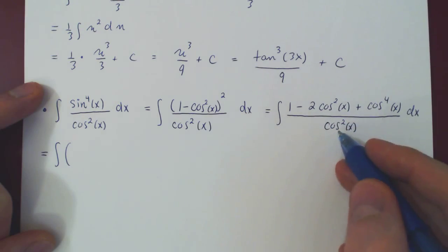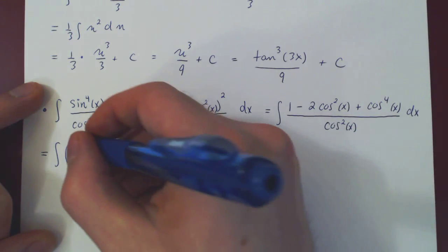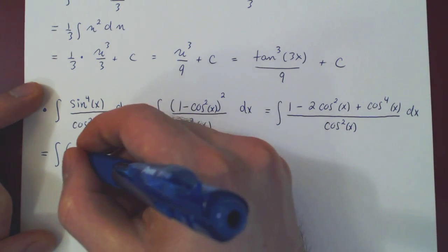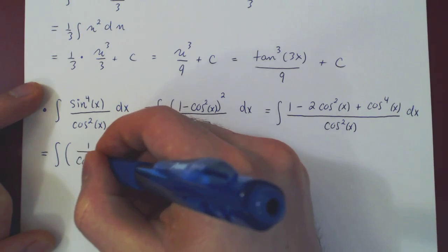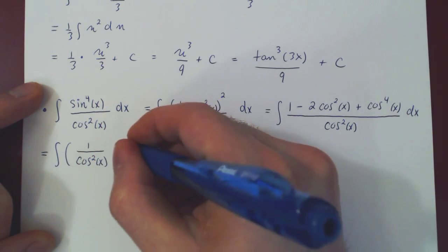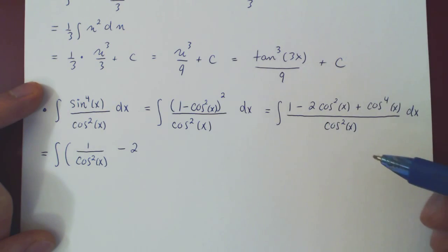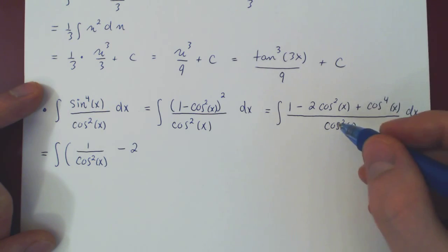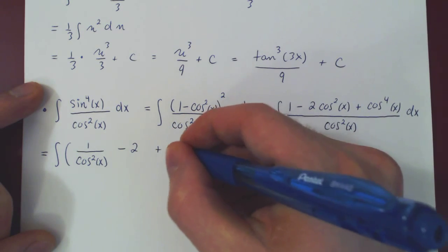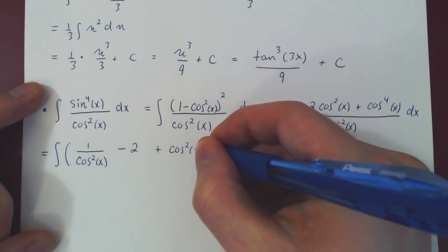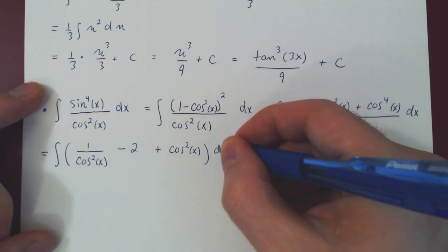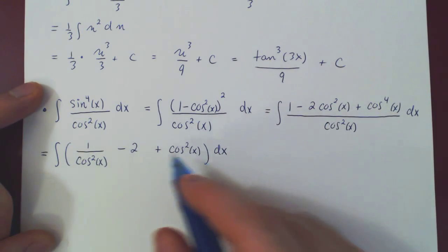So we have the integral of 1 over cos squared, minus 2 cos squared over cos squared is 1, so we're left with minus 2, plus cos to the 4 over cos squared, plus cos squared. And now we have these three integrals.